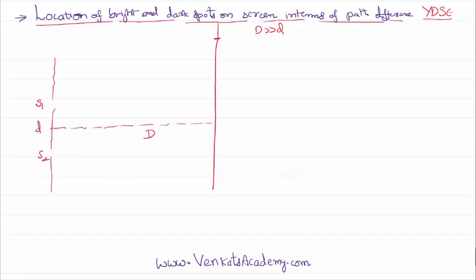And we want to know at a particular point P on the screen, are we going to get a bright spot or a dark spot? Further, the interference pattern waves has to reach that point P both from S1 and S2, as shown.